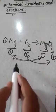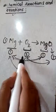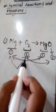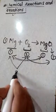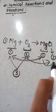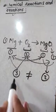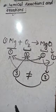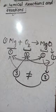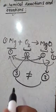The total number of atoms on the reactant side is 3 and on the product side is 2; both are not equal. So we confirm that this is an unbalanced chemical equation.